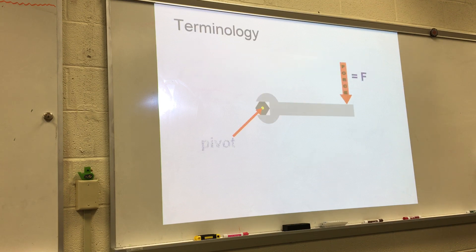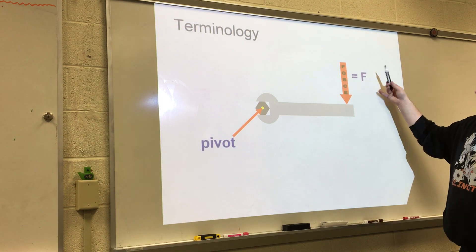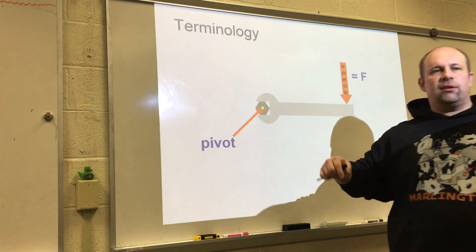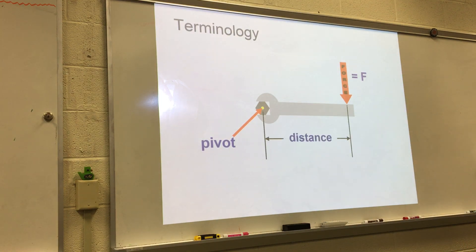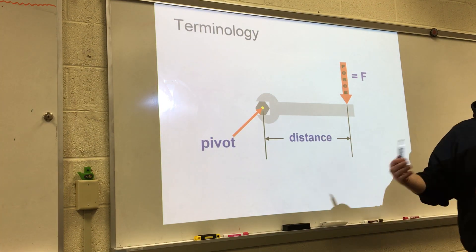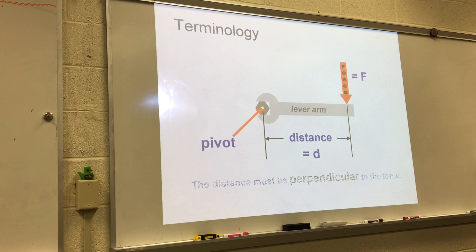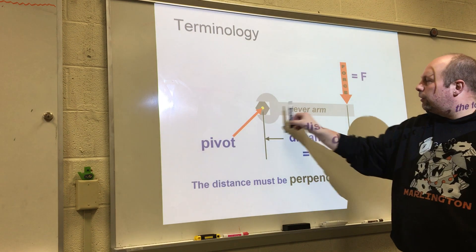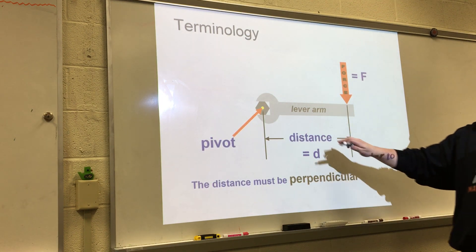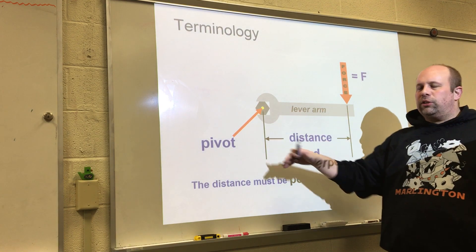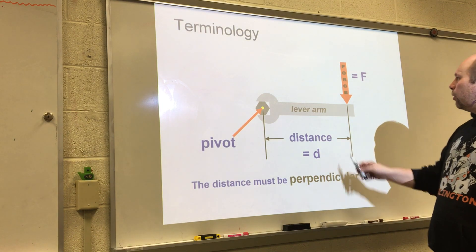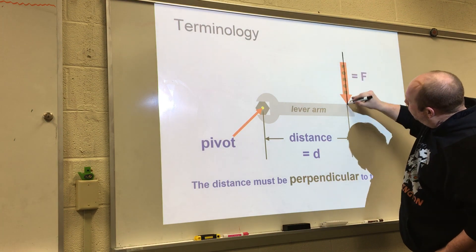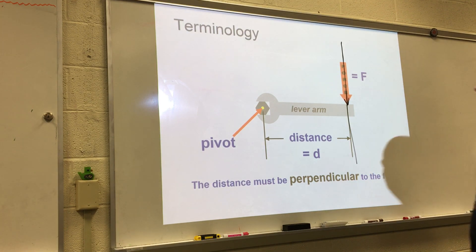We have the force itself that's applied, which we'll call F, and our pivot point — what we spin around, the point that stays stationary while everything else rotates. The distance between these two is designated with the letter d. The material between our pivot point and the force is called the lever arm — the object through which we translate the moment and cause the actual object to have this rotational force.